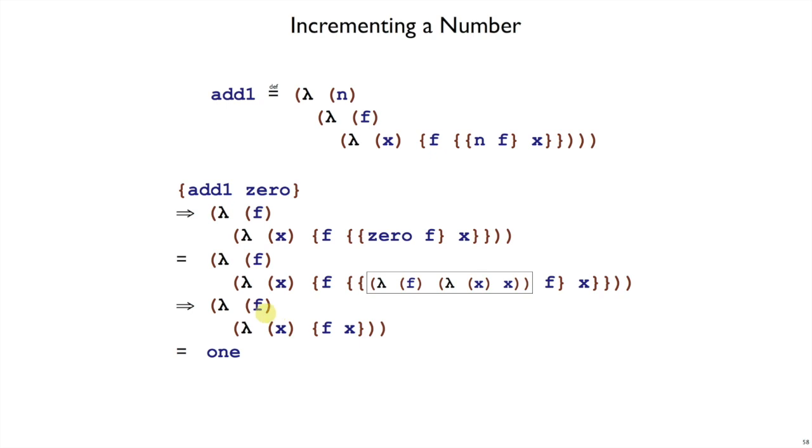And now, if we look at the term, this takes f, and it takes x, and it applies f one time to x. So that is exactly our encoding of the number 1. And you could double-check by trying add1 of 1 to make sure you get 2, and so on. But perhaps you'll take my word for it that this works out. And this is a valid implementation of add1 with respect to our number encoding.